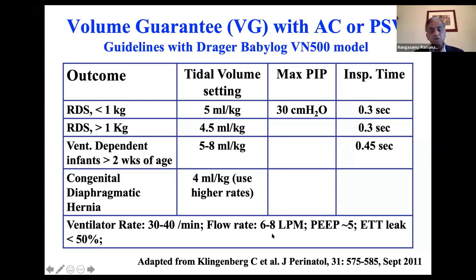Flow rate is 6 to 8 liters depending on the size of the endotracheal tube. ET tube leak will be displayed by the ventilator — try to keep it below 50%.